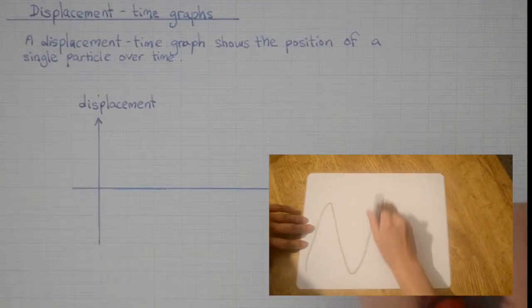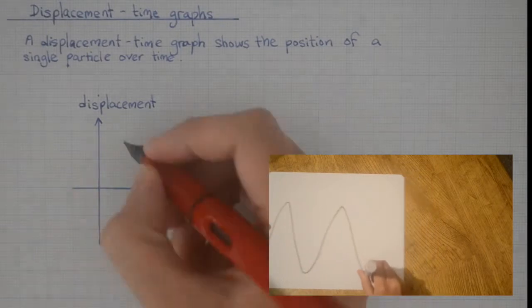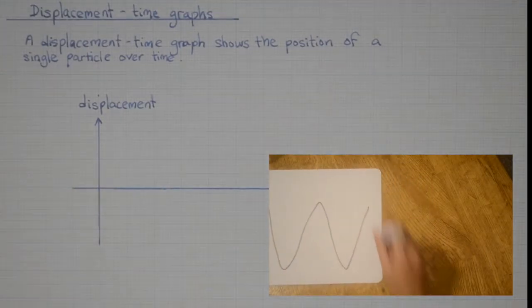At the same time, you move your pen vertically up and down. What kind of graph does it give you?